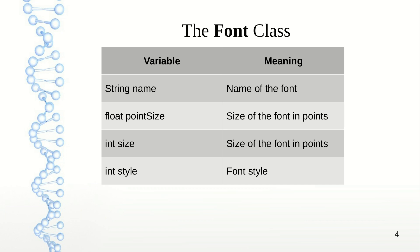In AWT, the Font class has got four different members. The first is the name, the second is the point size, the third is size, and finally there is style. The variable name represents the name of the font, something like Courier. Both point size and size represent the size of the font in points, but the first one is a float variable and the latter is an integer variable. And finally, we have style, which shows the style of the font — something like whether the font is in italics, bold, or simply plain.